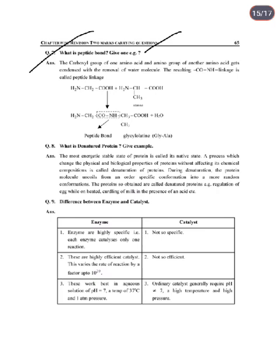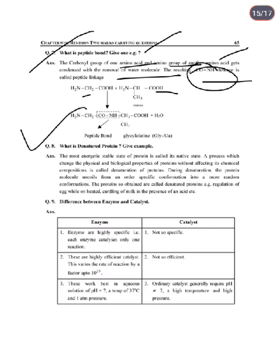Next: What is a peptide bond? Give an example. A peptide bond is formed when the carboxyl group of one amino acid condenses with the amino group of another amino acid with removal of water, resulting in the formation of a –CO–NH– bond. What is denaturation of protein? It is a process in which biological activity is lost without affecting chemical composition — physical and biological properties change, but the chemical composition remains the same.